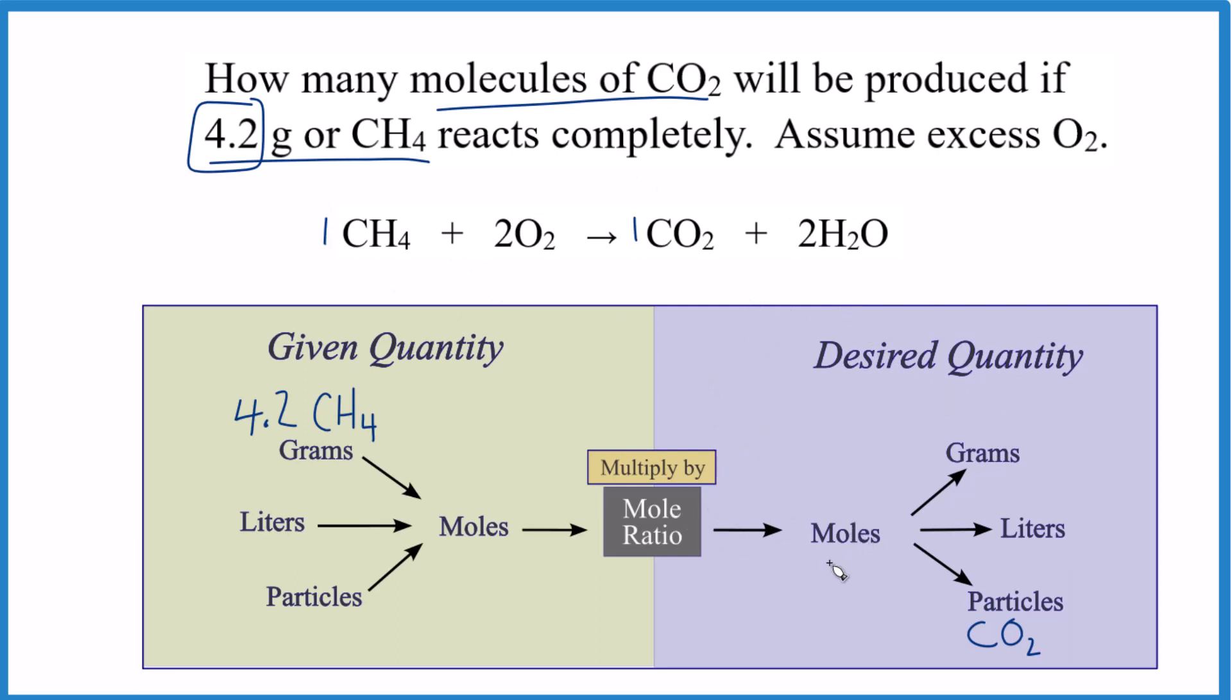That'll give us moles of CO2, and then here we had moles of CH4, which we can then just multiply by Avogadro's number, and we'll get molecules. So that's the plan here. So let's take a look at it.